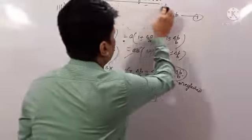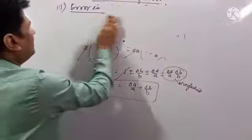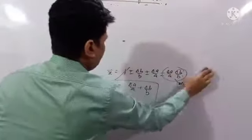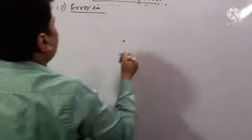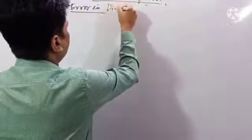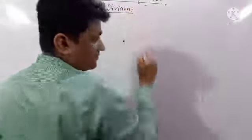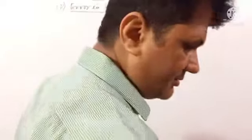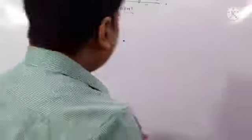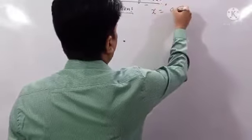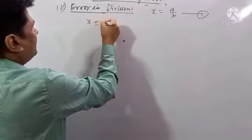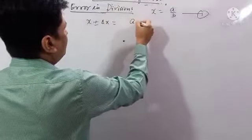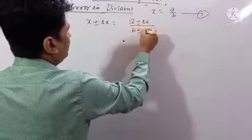Next, error in division. In the division case, x equals a by b — this is the equation for the true value. For measured values: x plus or minus delta x, a plus or minus delta a, b plus or minus delta b.